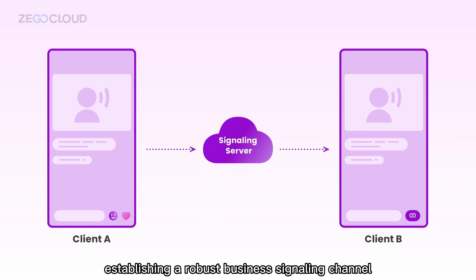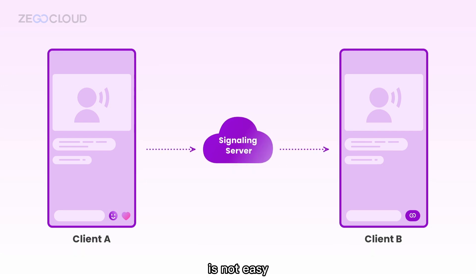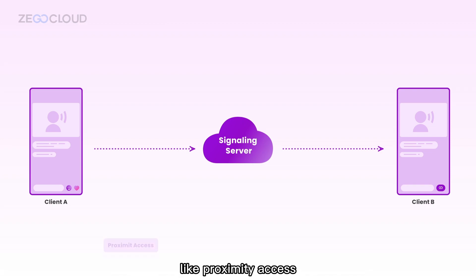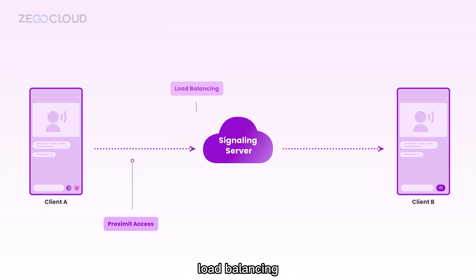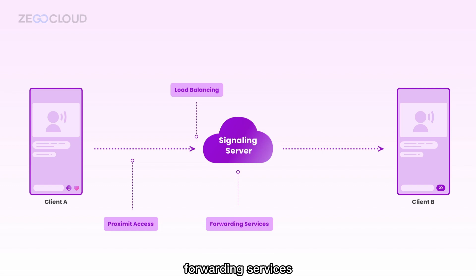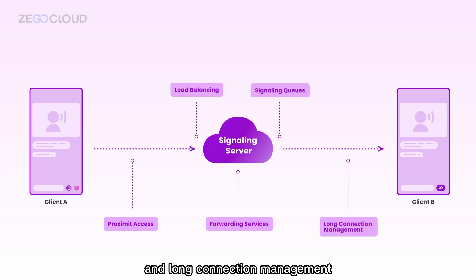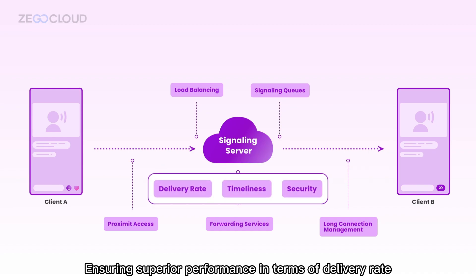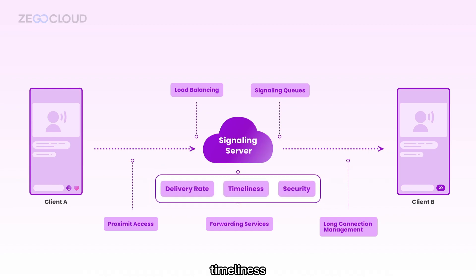However, establishing a robust business signaling channel is not easy, as it involves addressing technical challenges like proximity access, load balancing, forwarding services, signaling cues, and long connection management. Ensuring superior performance in terms of delivery rate, timeliness, and security is equally crucial.